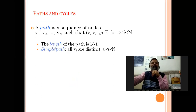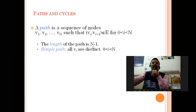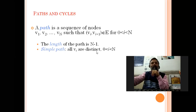The length of a path: if there are n nodes in the sequence, there will be n minus 1 pairs belonging to the set of edges, so the length of the path is n minus 1, where n is the number of nodes. A simple path is one where all the vertices in the path sequence are distinct.